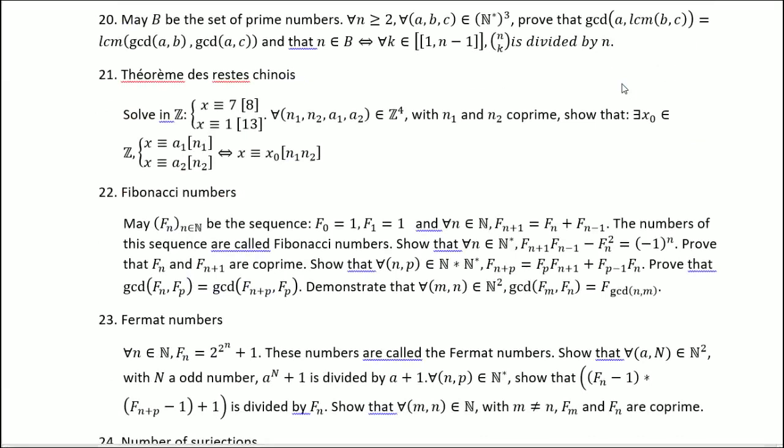I'll be talking about the sequence F where F_0 equals 1, F_1 equals 1, and for n in the natural numbers, F_{n+2} equals F_n plus F_{n+1}. The numbers of this sequence are called Fibonacci numbers. Show that for all n we have this property, then prove that F_n and F_{n+1} are coprime.